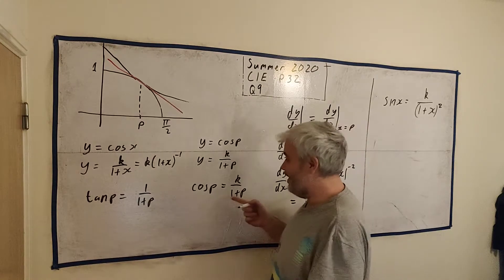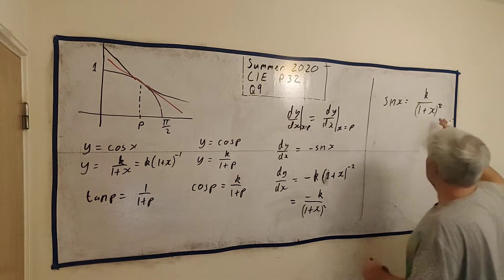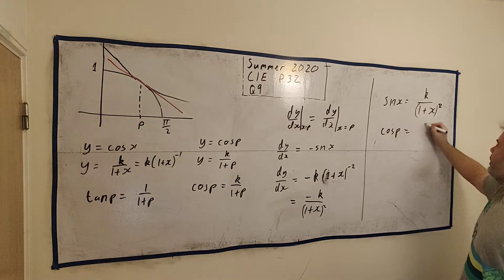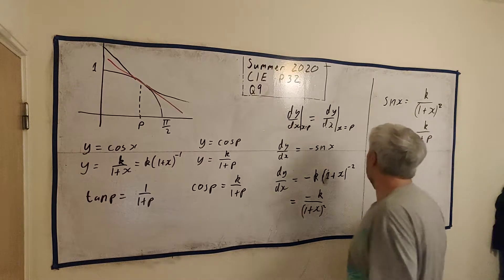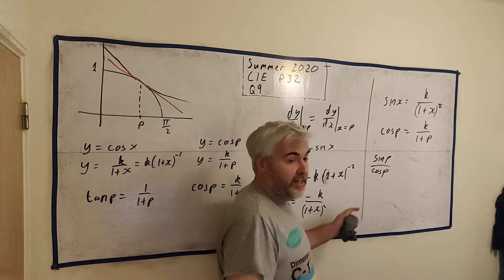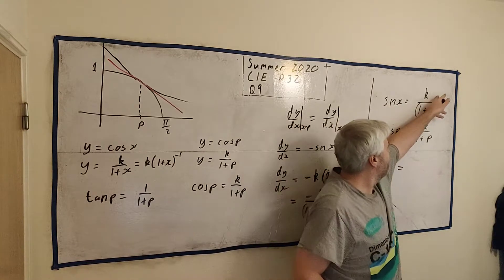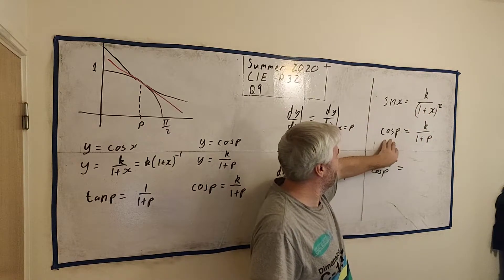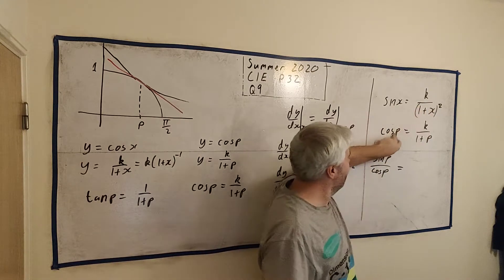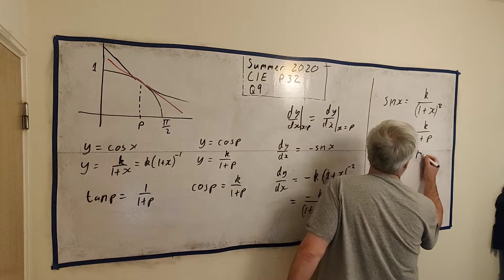The fact that the slope is equal to the slope gives us this information. Let's put them together. Cosine p is equal to k over 1 plus p. How about we divide sine p divided by cosine p. Now you should be thinking that because we know we want to get tangent. We divide the right by the right, sorry, the left, what's on the left here, divide what's on the left here, and divide what's on the right here, what's on the right here. It's fair because sine is equal to this guy, cosine is equal to this.